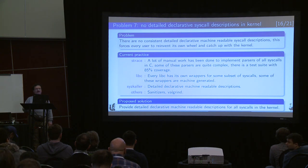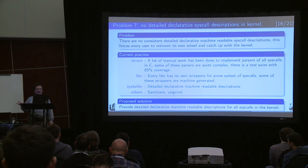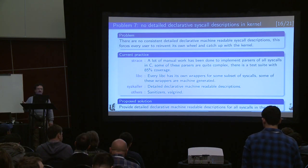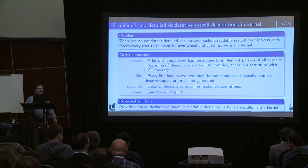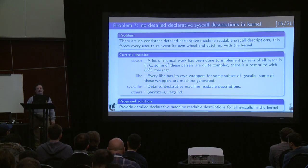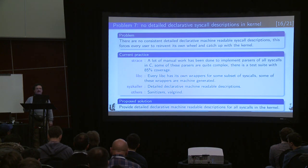If you have a look at any libc implementation, it has its own wrappers. Some of them are generated because they are straightforward, but some are more complex because they have to convert data structures from the libc representation - which is mandated by standards - to the kernel representation. Other projects also reinvent the wheel. If you have a look at syzkaller, it has very detailed declarative machine-readable descriptions. Sanitizers do something about this too. But there's no help from the kernel, and it would be really great if this information were available from the kernel itself.